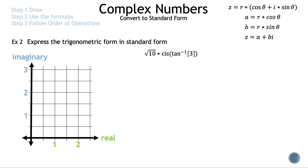Let's move on to example 2. The question: express the trigonometric form √10 · cis(tan⁻¹ 3) in standard form. First, we rewrite cis using cosine and sine, and distribute √10 to both terms, giving √10·cos(tan⁻¹ 3) + √10·i·sin(tan⁻¹ 3).